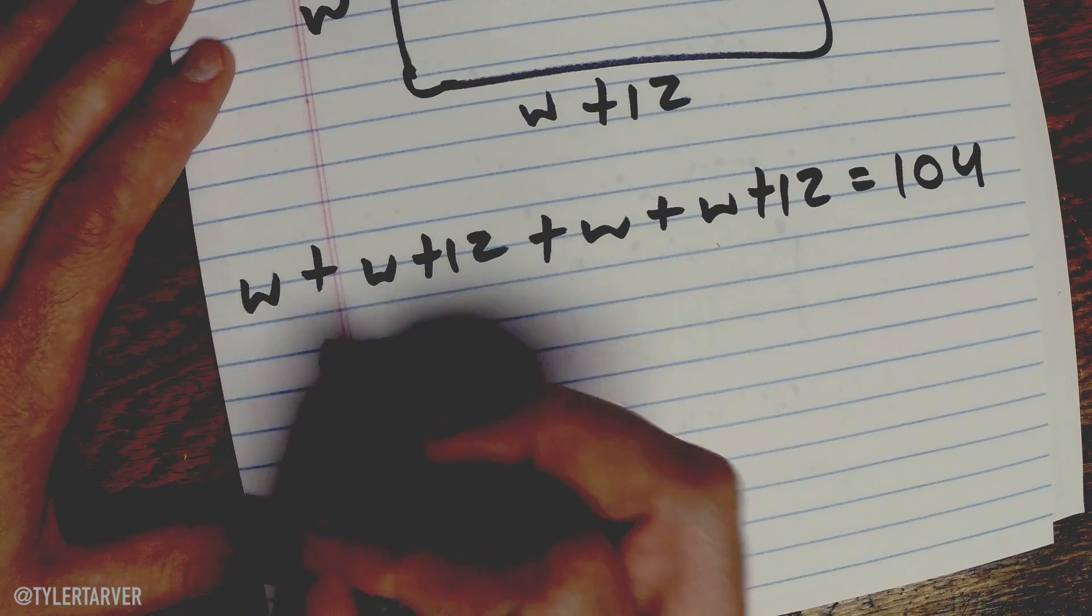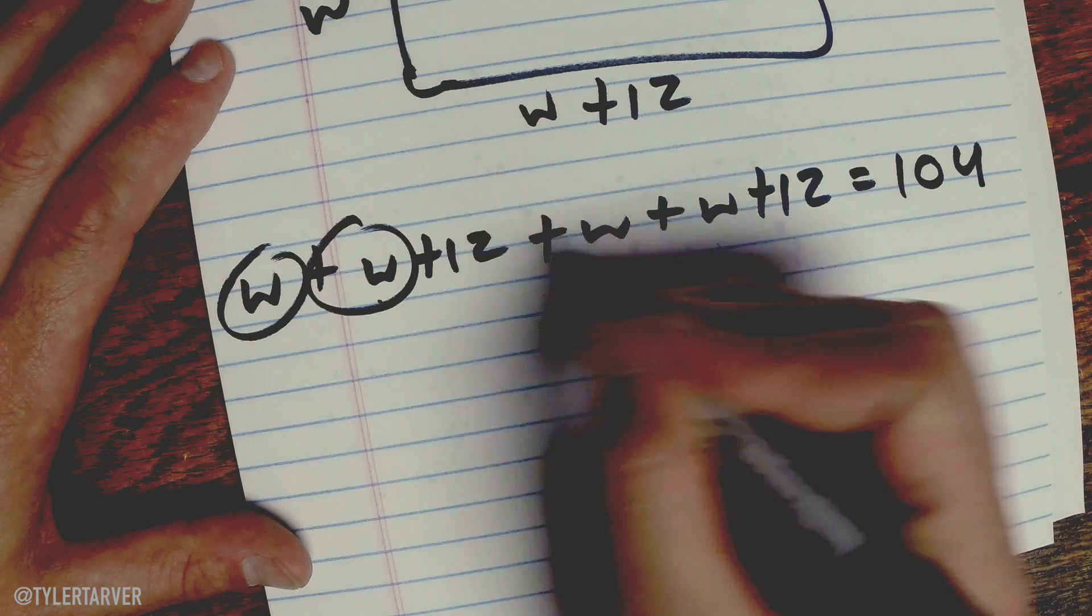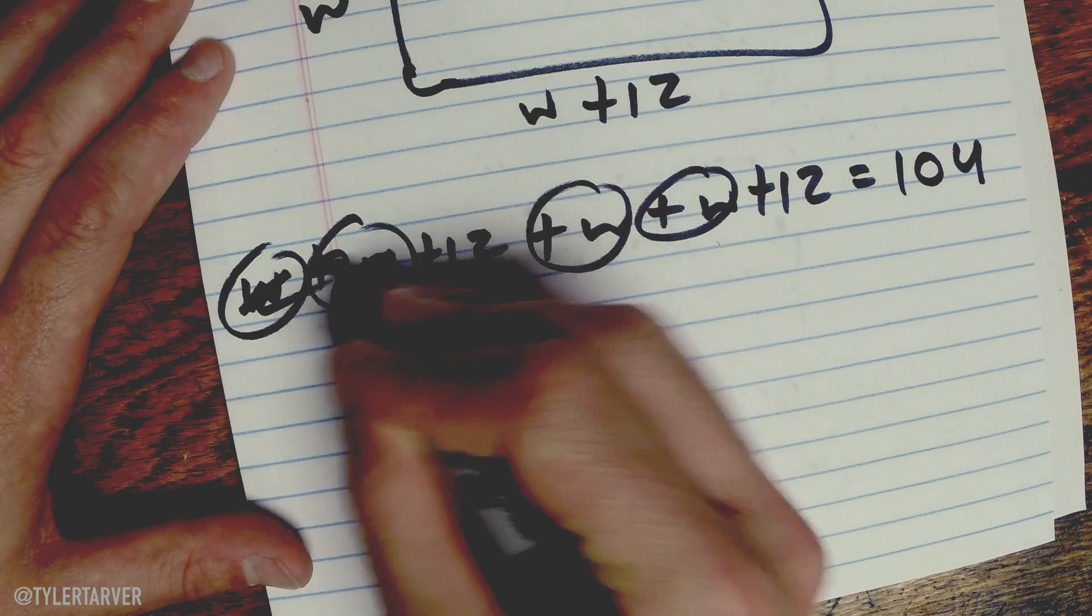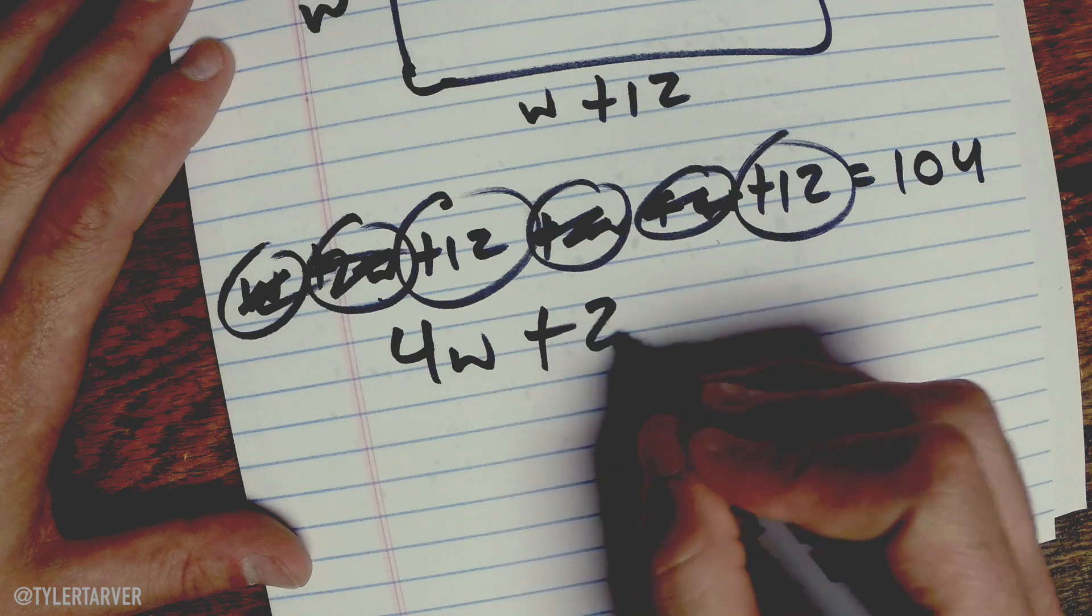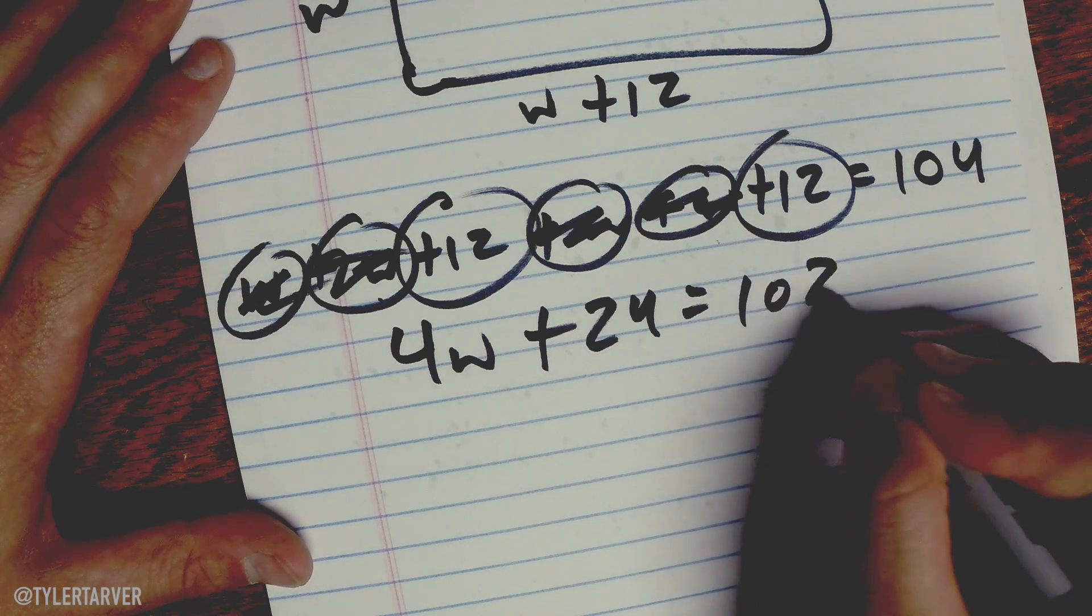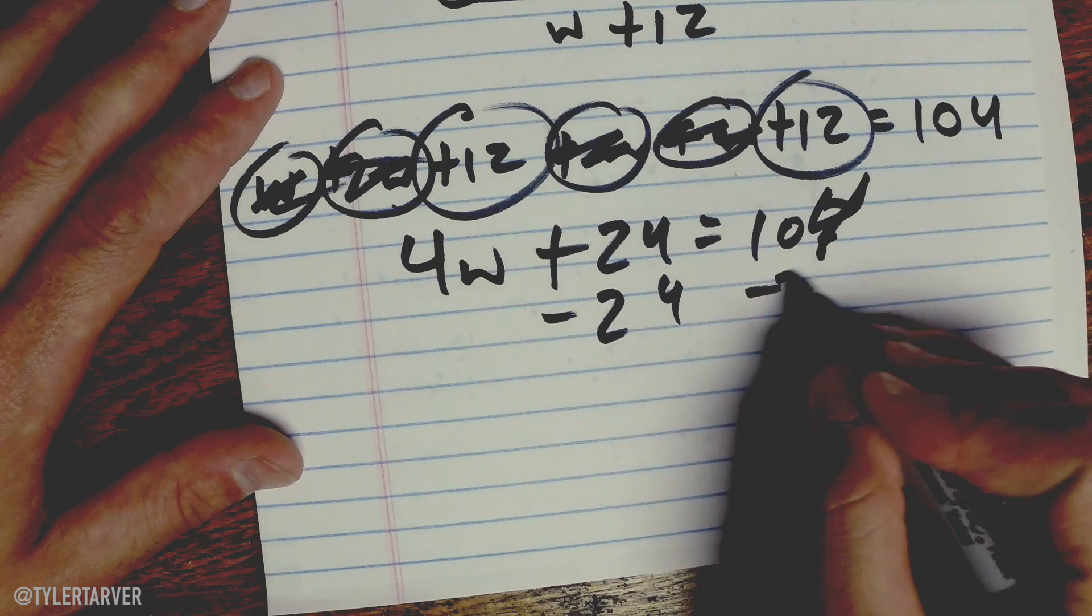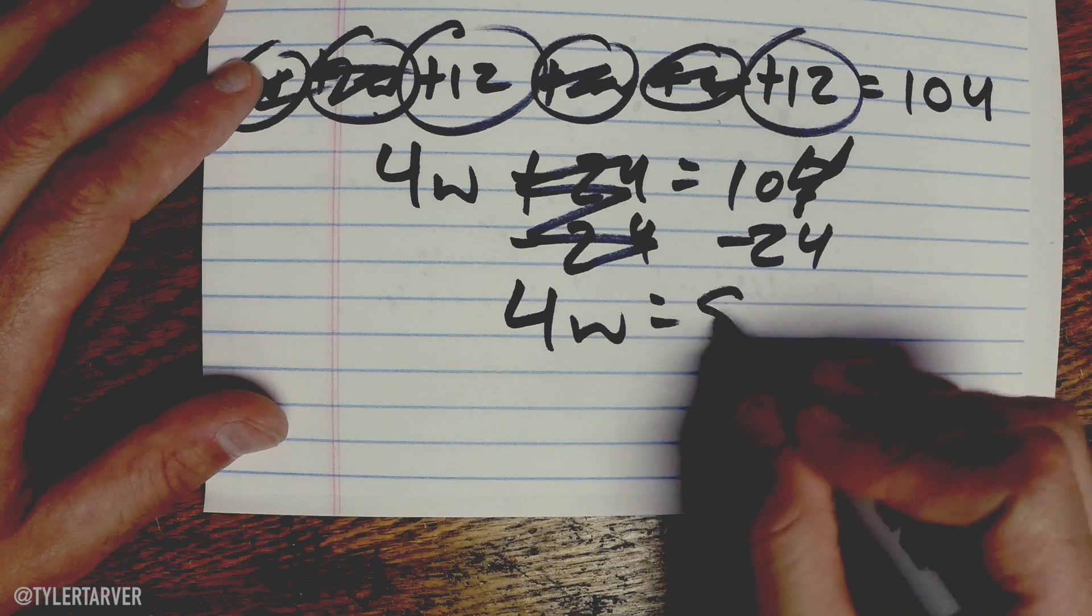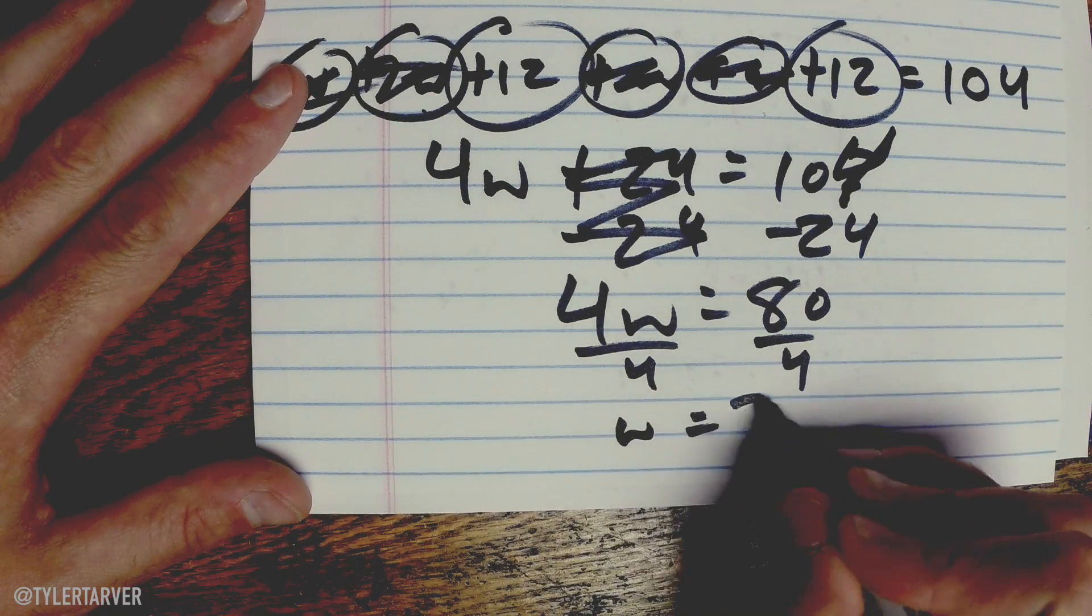Now I'm just combining like terms. W plus W plus W plus W. So I've got one, two, three, four. So that's four W. I'm gonna mark it out so I don't count them again. I can add my two twelves together and be plus 24 equals 104. Wrote that wrong. Okay, let's solve for W. We get to subtract 24 from both sides. Goes away. Bring down my four W. That would be 80. Then all I do is divide by 4. W equals 20. And then you're done.